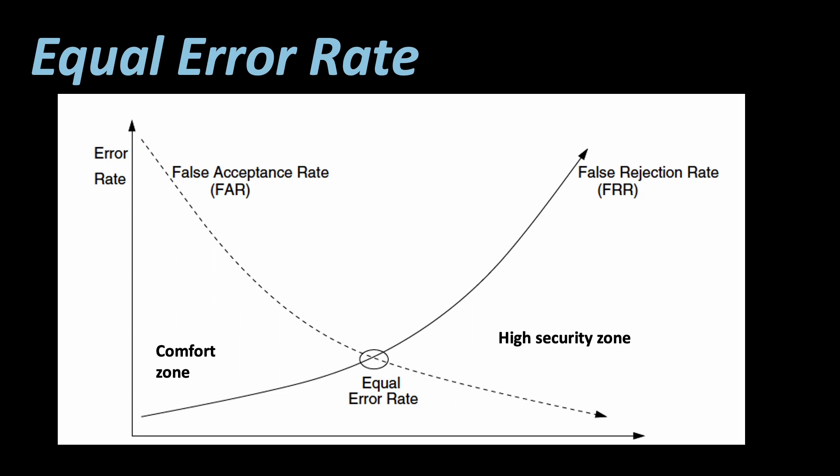And if we are on the left side of the graph, meaning we have a very loose system that might allow some invalid persons to authenticate, we are in a so-called comfort zone. This is called this way because it provides the most comfort for all users or even valid users.